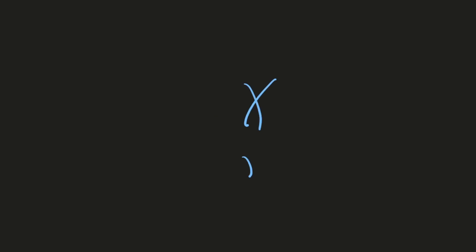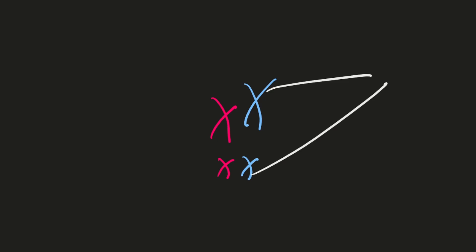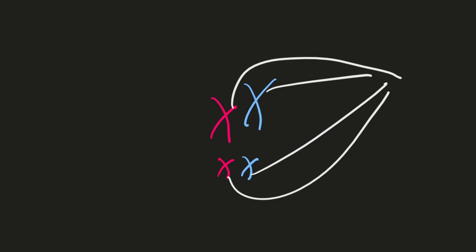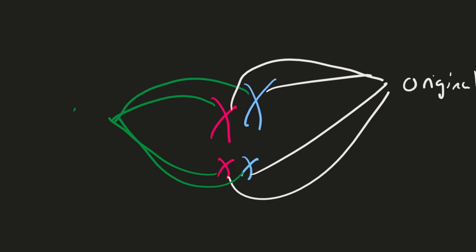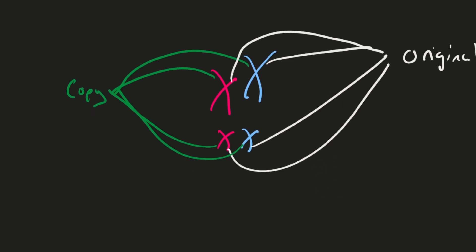What happens next is the membrane of the nucleus disappears, so you just have the chromosomes floating freely. The chromosomes essentially line themselves up in the middle of the cell — the smaller ones and the larger ones. Then the originals are pulled to one side of the cell and the copies are pulled to the other side. One from each X shape is being pulled in opposite directions — originals on this side, copies on the other side.